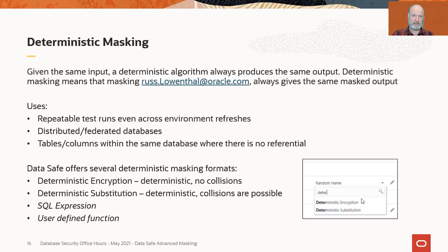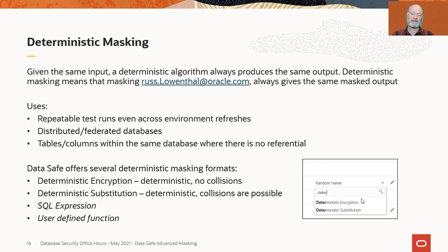The first use case is deterministic masking. Deterministic masking simply means that given the same input, I produce the same output. It differs from random masking, where the same input might produce a different output every time. So if I'm masking rust.lowenthal@oracle.com randomly, one time it may come out to Mary Sue, the next time to George Stephan. With deterministic masking, it's going to come out to the same masked value every time, across multiple masking sessions, regardless of what database I'm masking it on.